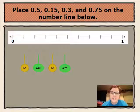And our final question is place five tenths, fifteen hundredths, three tenths, and seventy-five hundredths on the number line below. Remember, to find the correct placement on the number line, you count the spaces, not the lines.